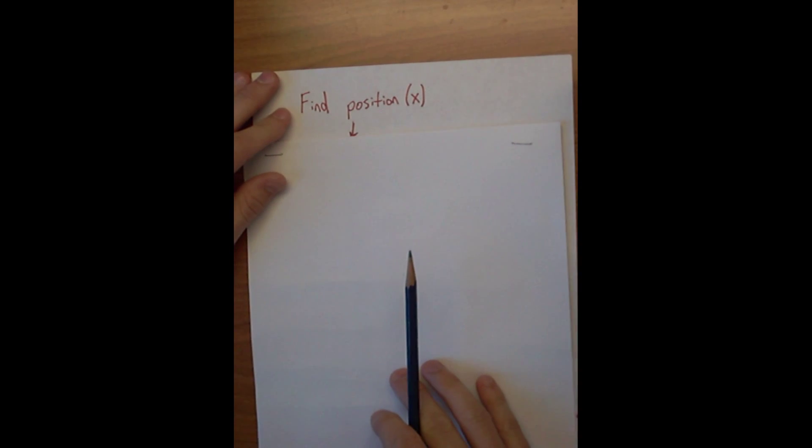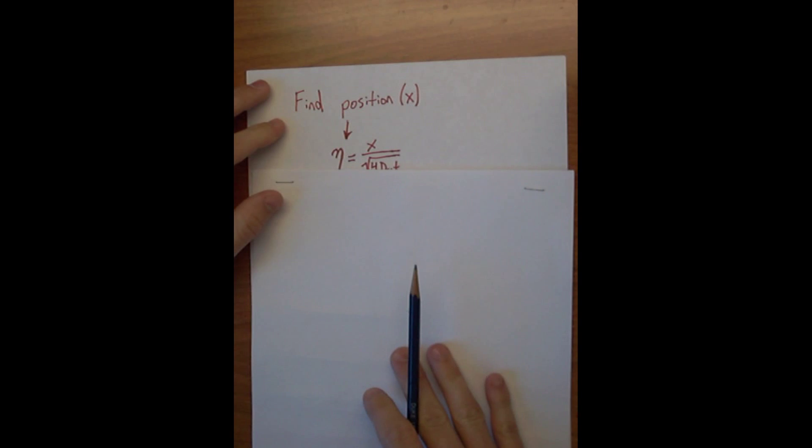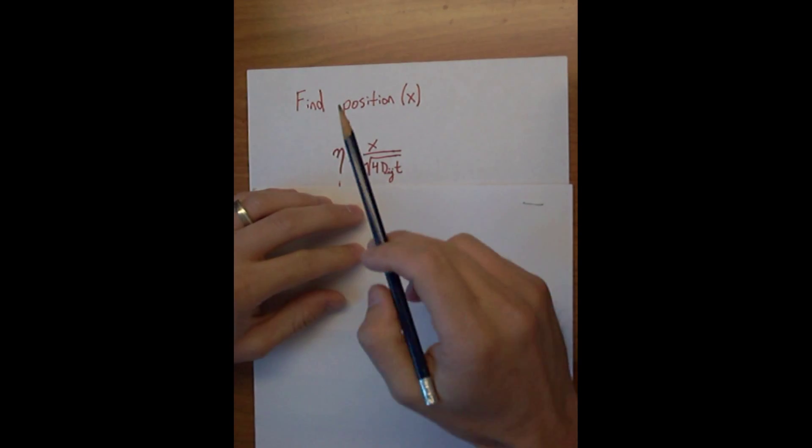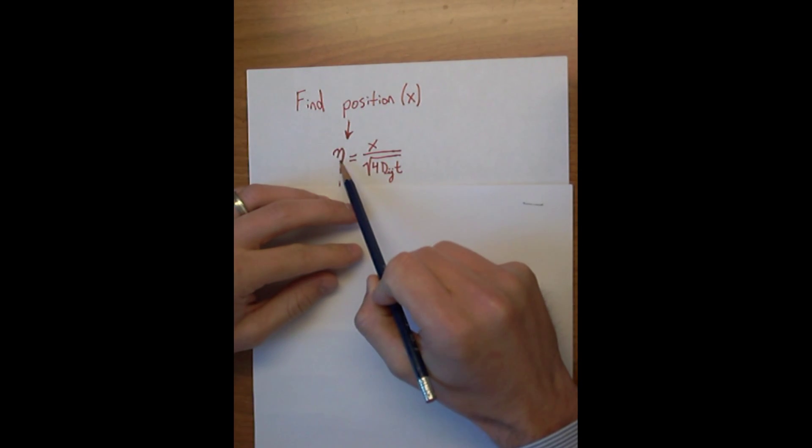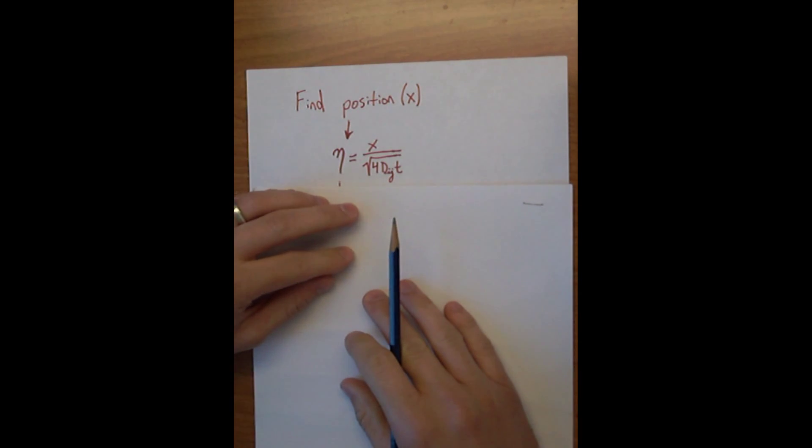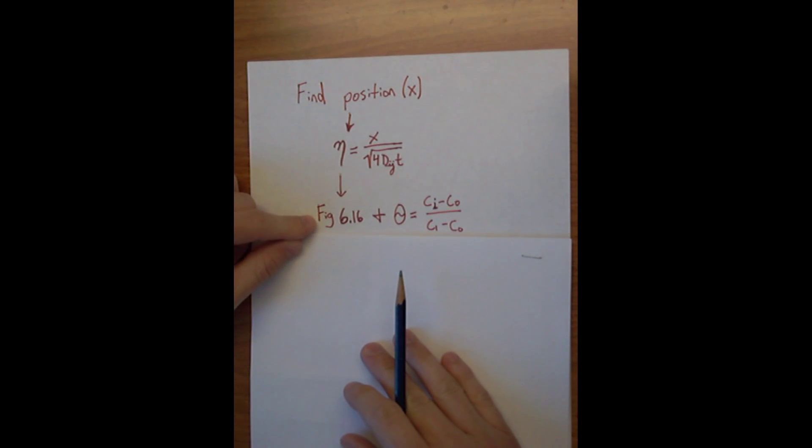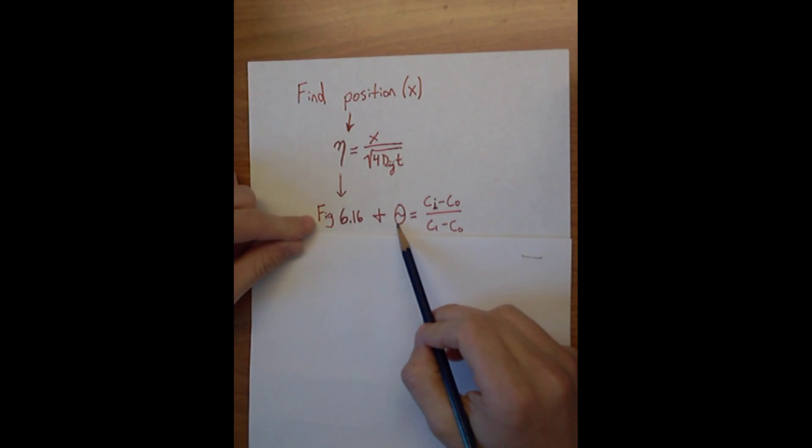To solve the problem, we're looking for the position X at which the concentration is 50% of what's in the bath. To find X, we first need to figure out what the dimensionless position eta is. To find eta, we can use figure 6.16 in the book, and we need to know theta, which is the normalized concentration.